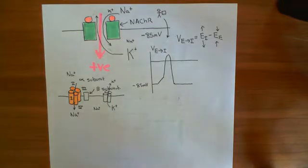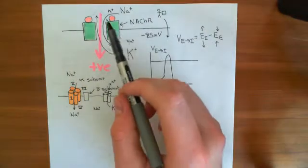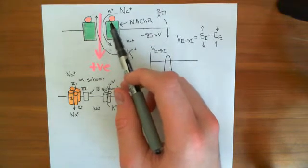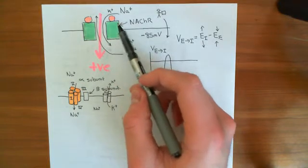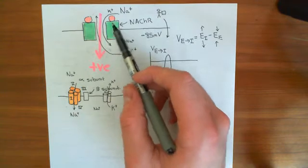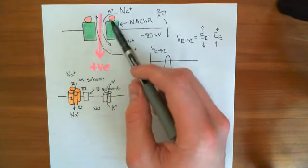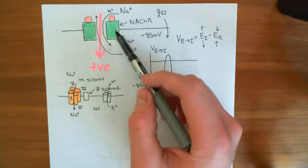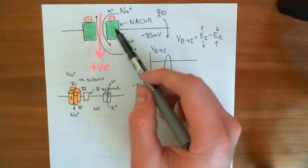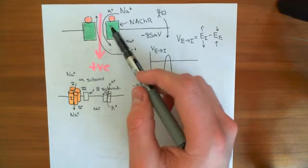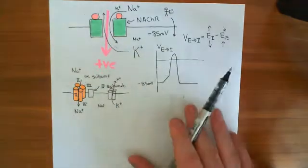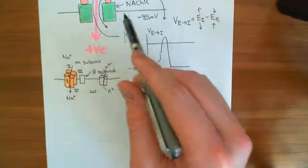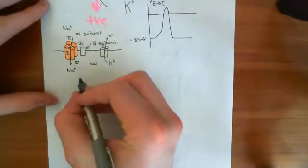Welcome to this fourth video on skeletal muscle contraction. So far, what we've discussed is how acetylcholine will diffuse across the synaptic cleft from the axon terminal of the stimulating neuron, and it will bind to nicotinic acetylcholine receptors within the sarcolemma. Two acetylcholine molecules will bind to each nicotinic acetylcholine receptor, triggering the receptor to open, which allows positive current to flow into the cytoplasm. This then triggers that portion of the sarcolemma to undergo an action potential.